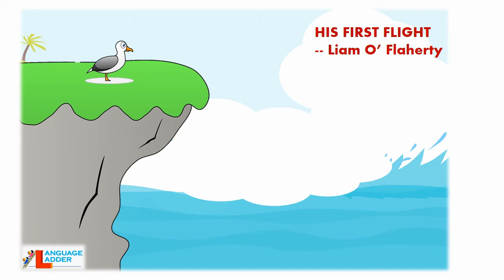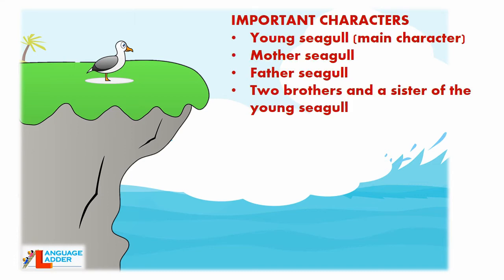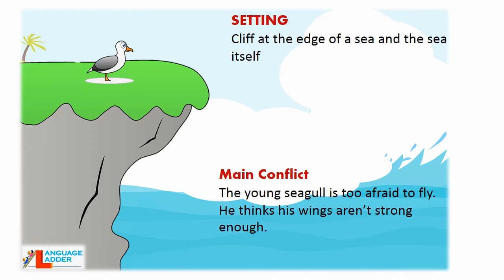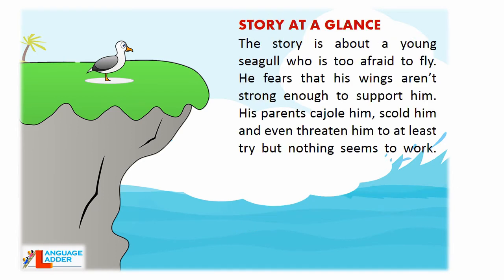The important characters of the story are the young seagull, who is the main character, mother seagull, father seagull, and two brothers and a sister of the young seagull. The story takes place at the cliff at the edge of a sea, and the sea itself. The main conflict is that the young seagull is too afraid to fly — he thinks his wings aren't strong enough to support his flight. Let's look at the story at a glance.